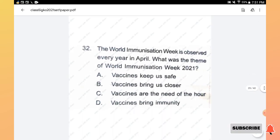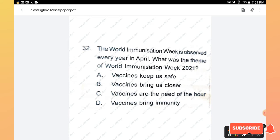Question number 32: The World Immunization Week is observed every year in April. What was the theme of World Immunization Week 2021? Options are: vaccines keep us safe, vaccines bring us closer, vaccines are the need of the hour, vaccines bring immunity. The right answer is option B, vaccines bring us closer.